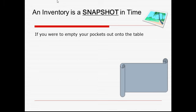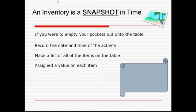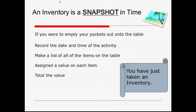An inventory is like a snapshot in time. For example, if you would empty your pockets on a table, we could do a sample of what inventory is. Basically, inventory is a record — you record the date and time of the activity, put all those things down on the tabletop, and take an inventory. You assign a value to what's in your pocket, and now you know what you have. That's a snapshot in time.